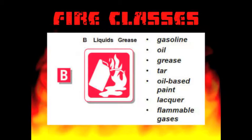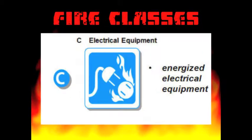A Type B fire would include gasoline, oil, grease, tar, oil-based paint, or flammable gases.